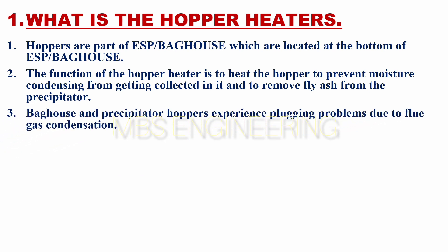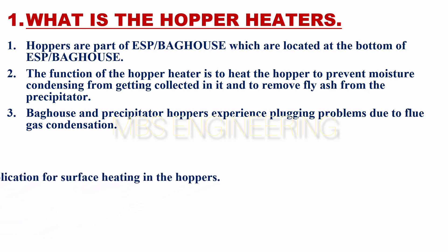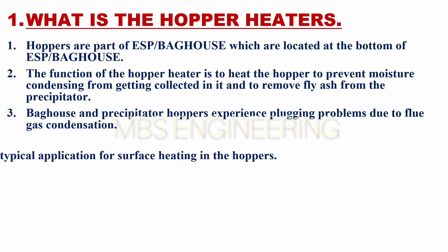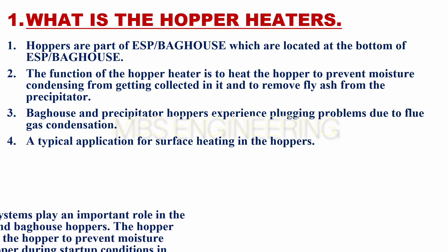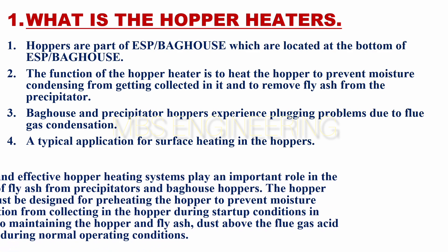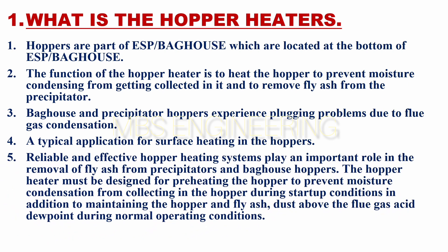Bag house and precipitator hoppers experience plugging problems due to flue gas condensation. This is an expensive and unnecessary problem. A typical application is surface heating in the hoppers. Reliable and effective hopper heating systems play an important role in the removal of fly ash from precipitators and bag house hoppers.